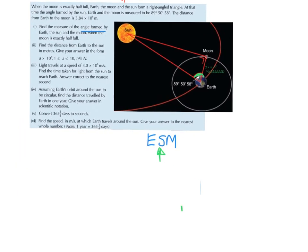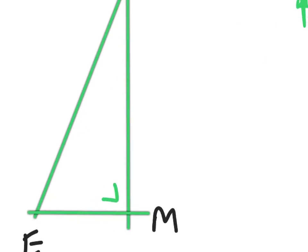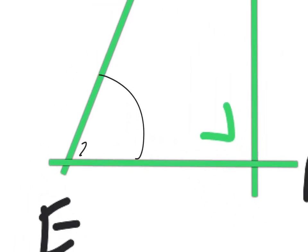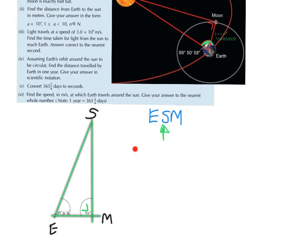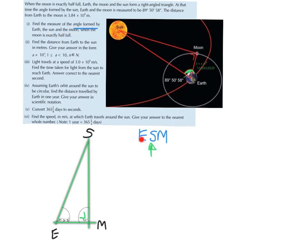I'm going to draw a right angle triangle so we have an easier diagram to work with. I'll call the vertices E for earth, M for moon, and S for sun. We know the angle at E is 89 degrees 50 minutes and 58 seconds, and this is a right angle triangle so one angle is 90 degrees. We're asked to find the angle at the sun.